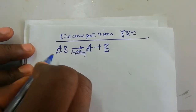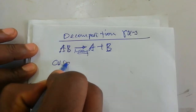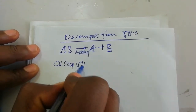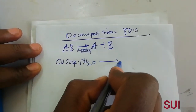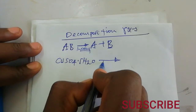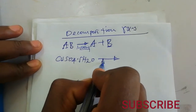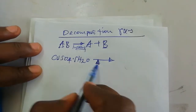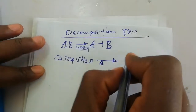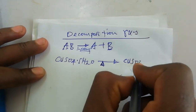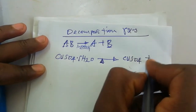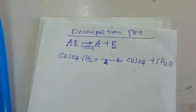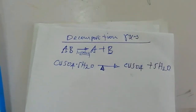In this video we are going to decompose copper sulfate pentahydrate. When we heat copper sulfate pentahydrate, upon heating, it converts into copper sulfate plus five molecules of water.